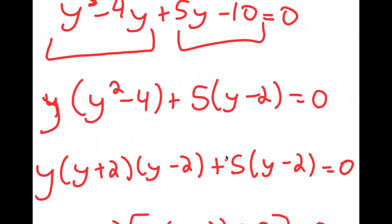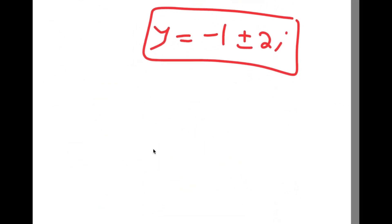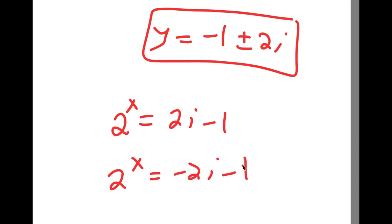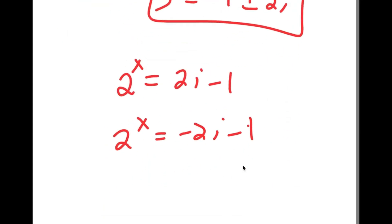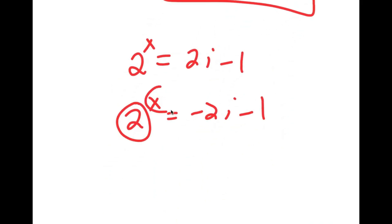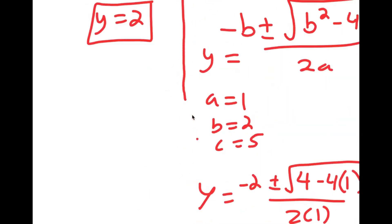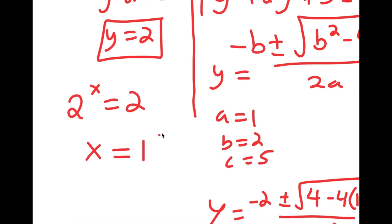Remember we let 2 to the power of x equal y. So I get 2 to the power of x is equal to 2i minus 1, and 2 to the power of x is equal to negative 2i minus 1. We can't take a positive base and make it equal to something with i, so there's no solution for these, meaning we can only use y equals 2. So I get 2 to the power of x equals 2, meaning our only solution for x is 1.